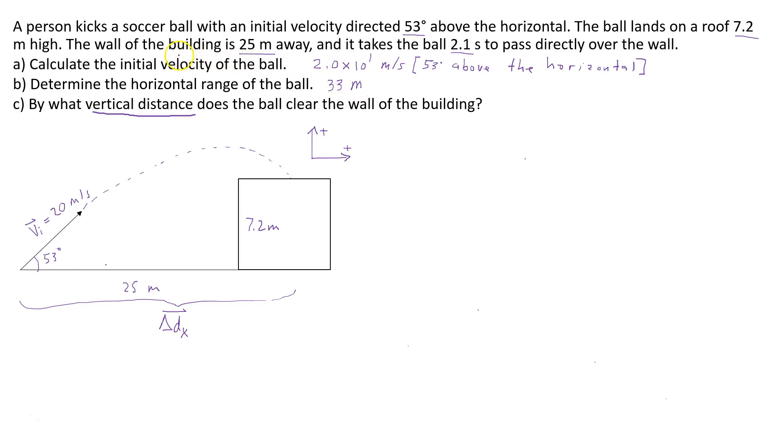In two previous videos, I found the initial velocity of the ball and the horizontal range of the ball. The initial velocity of the ball is 20 meters per second and the horizontal range of the ball is 33 meters.